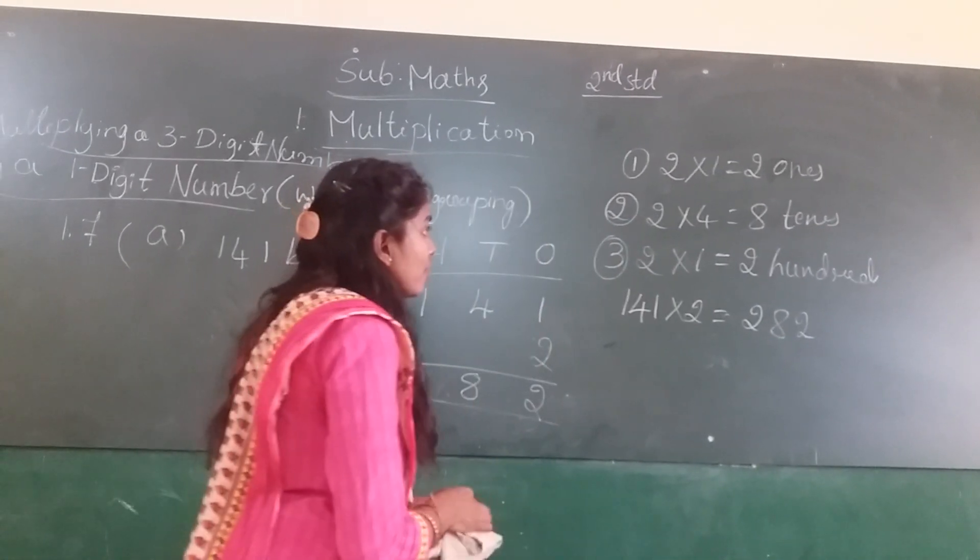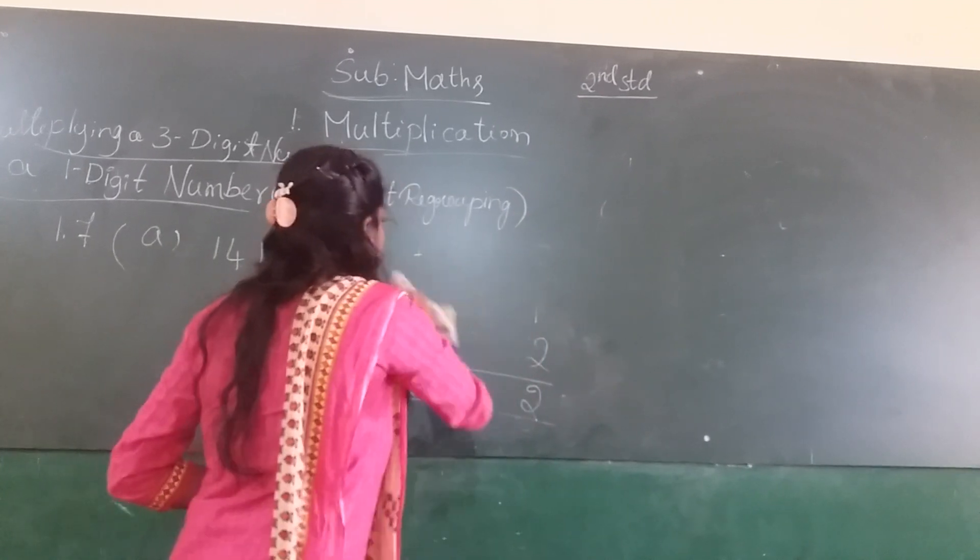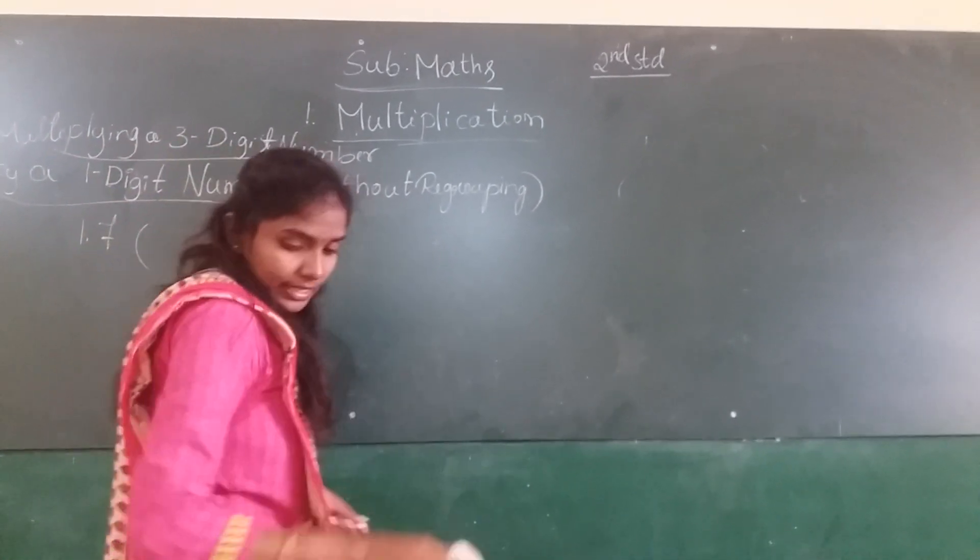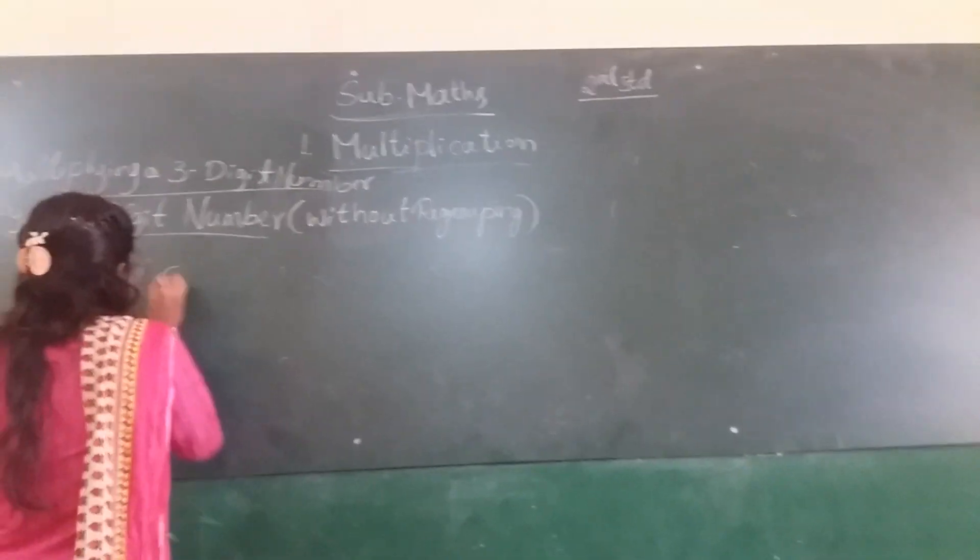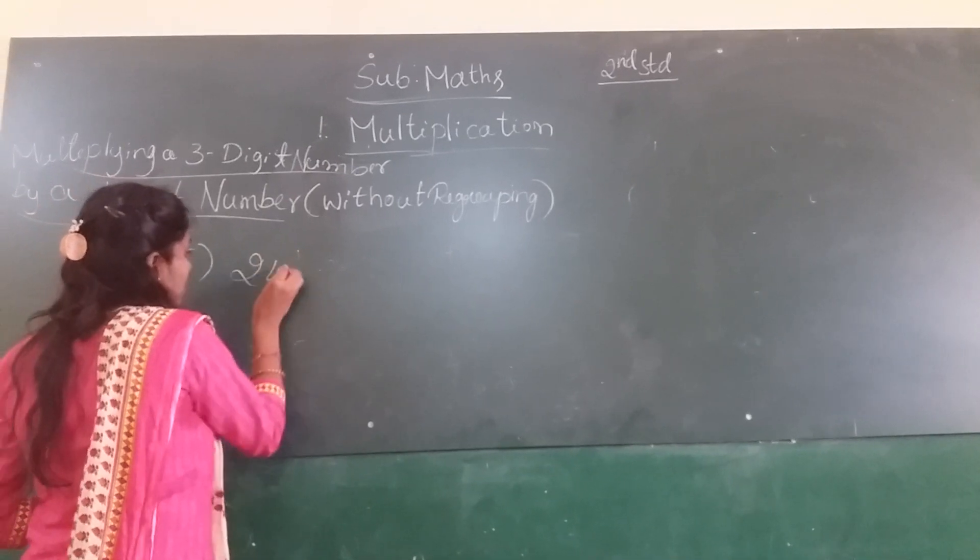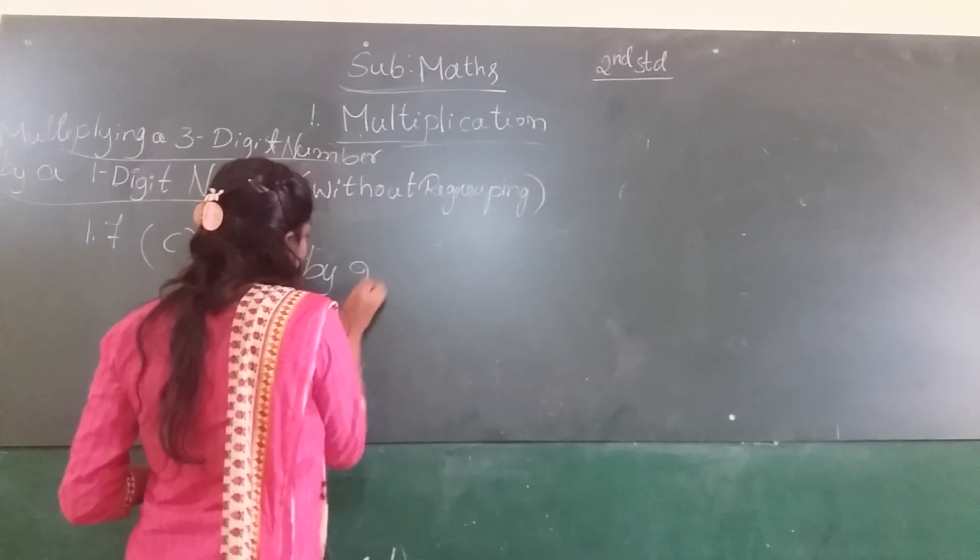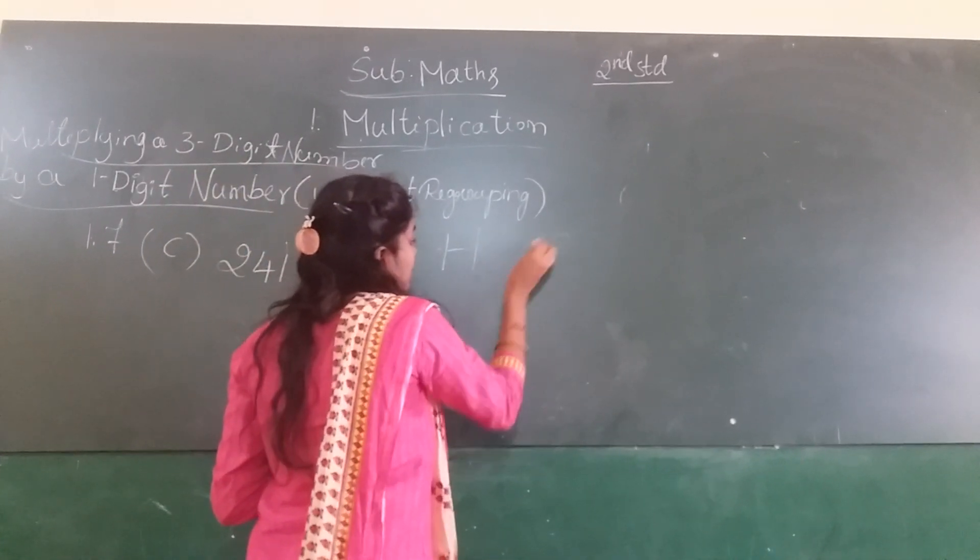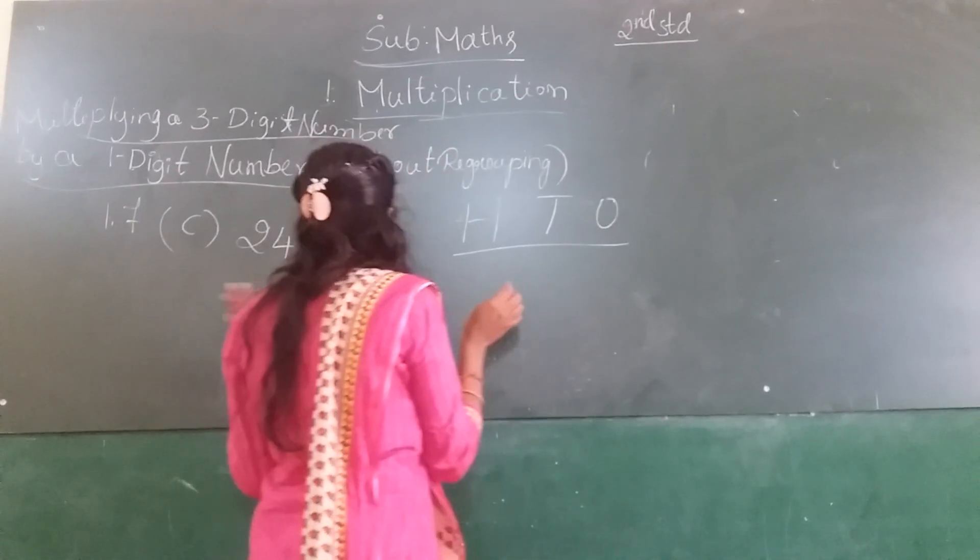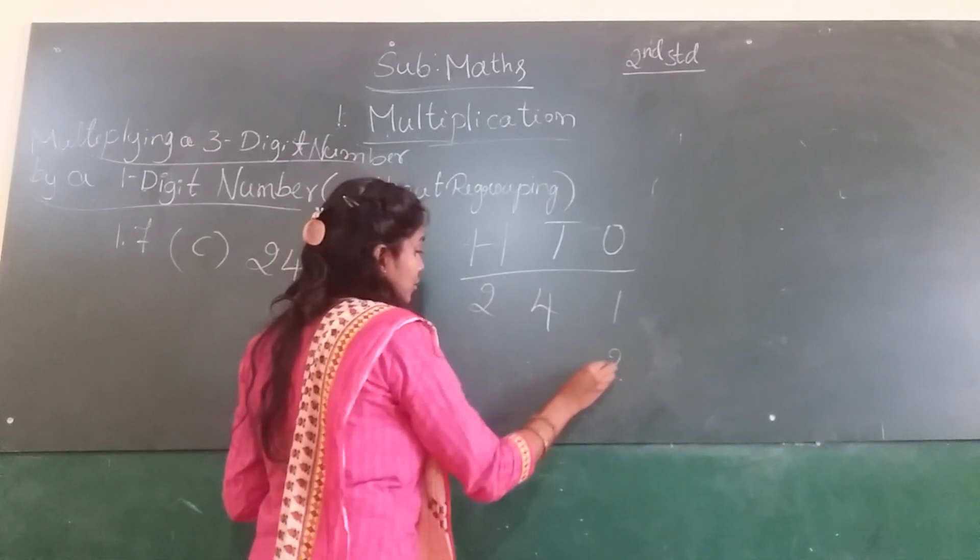Next, we solve one more problem. C question. 241 by 2. So first make a column. Next, arrange the numbers in place value chart: 2, 4, 1 and 2.